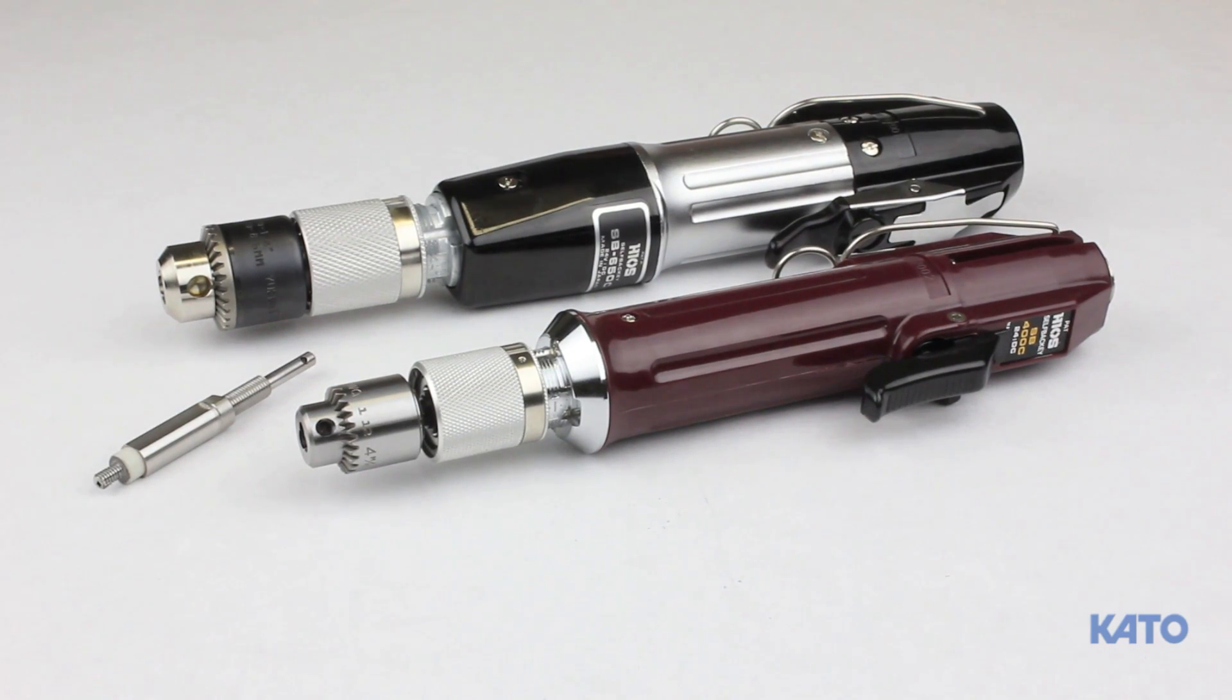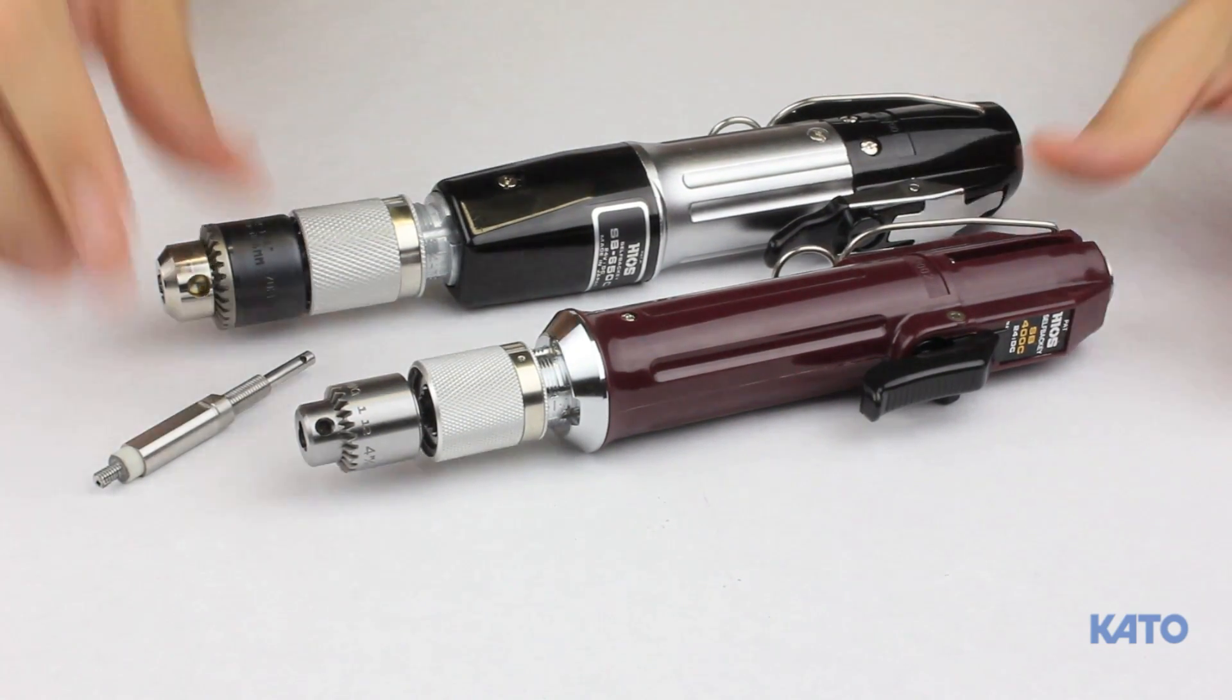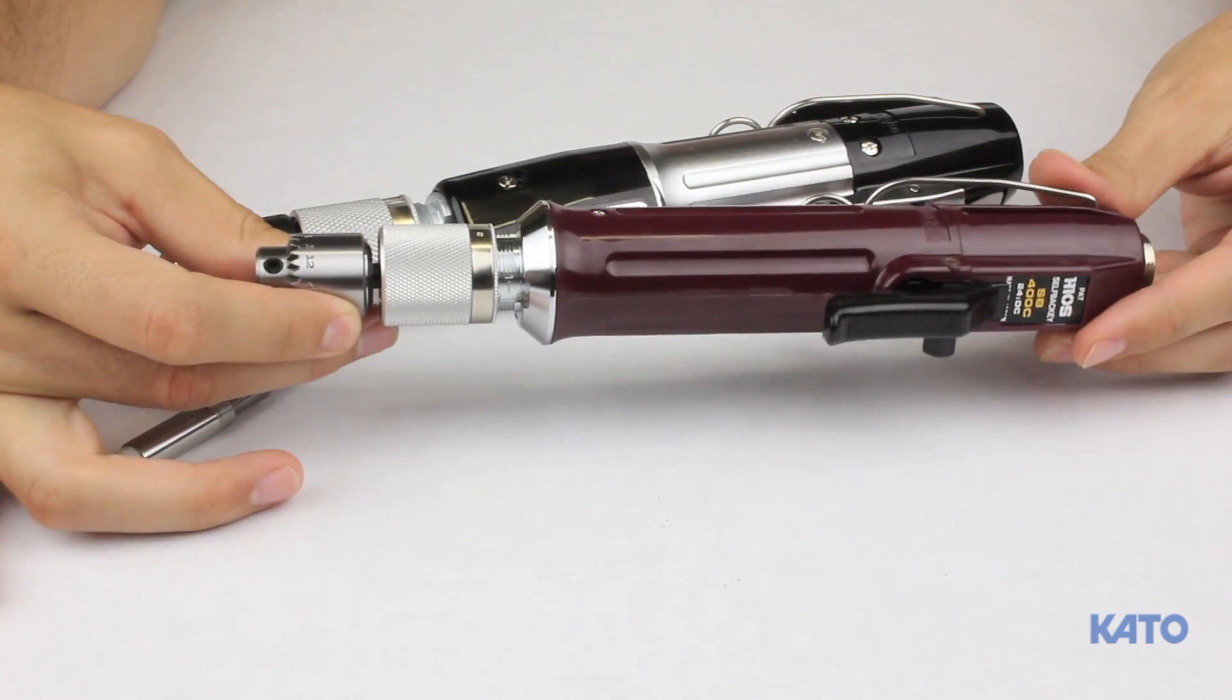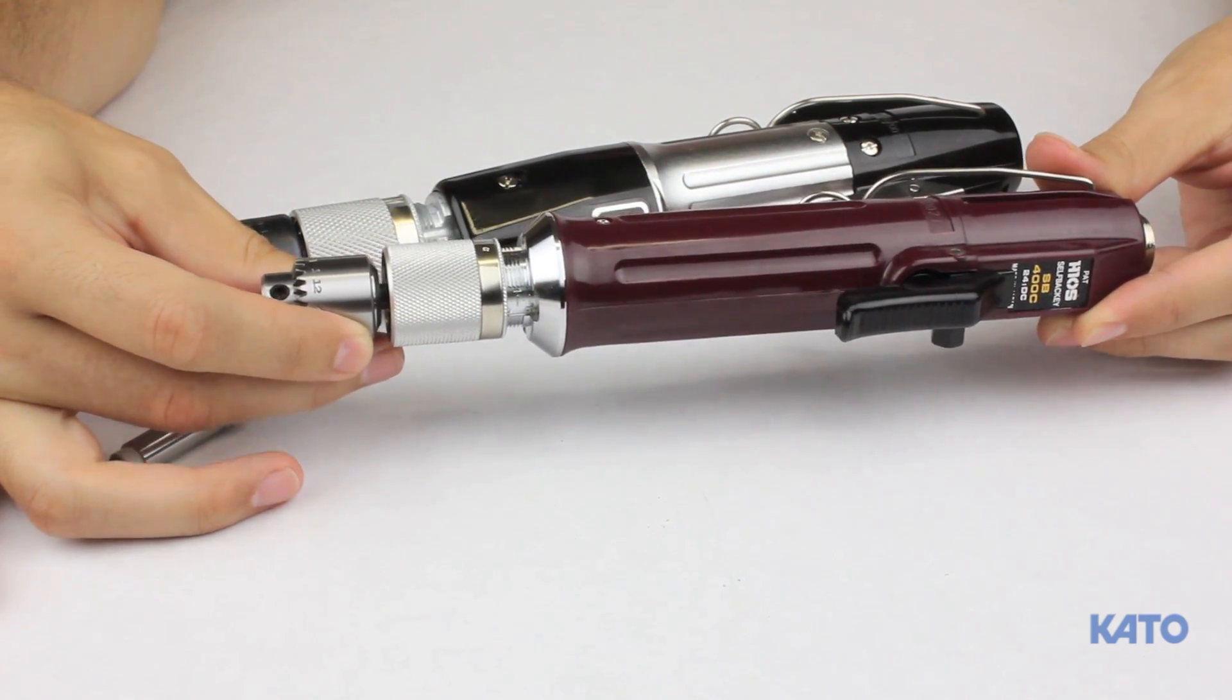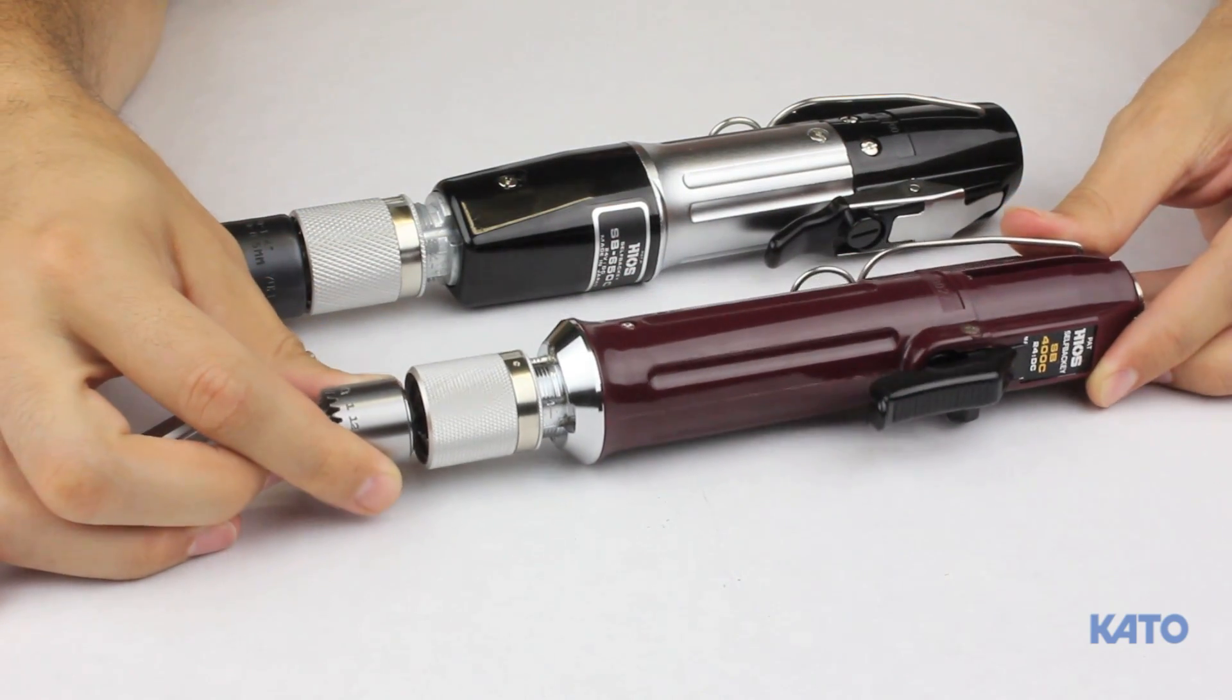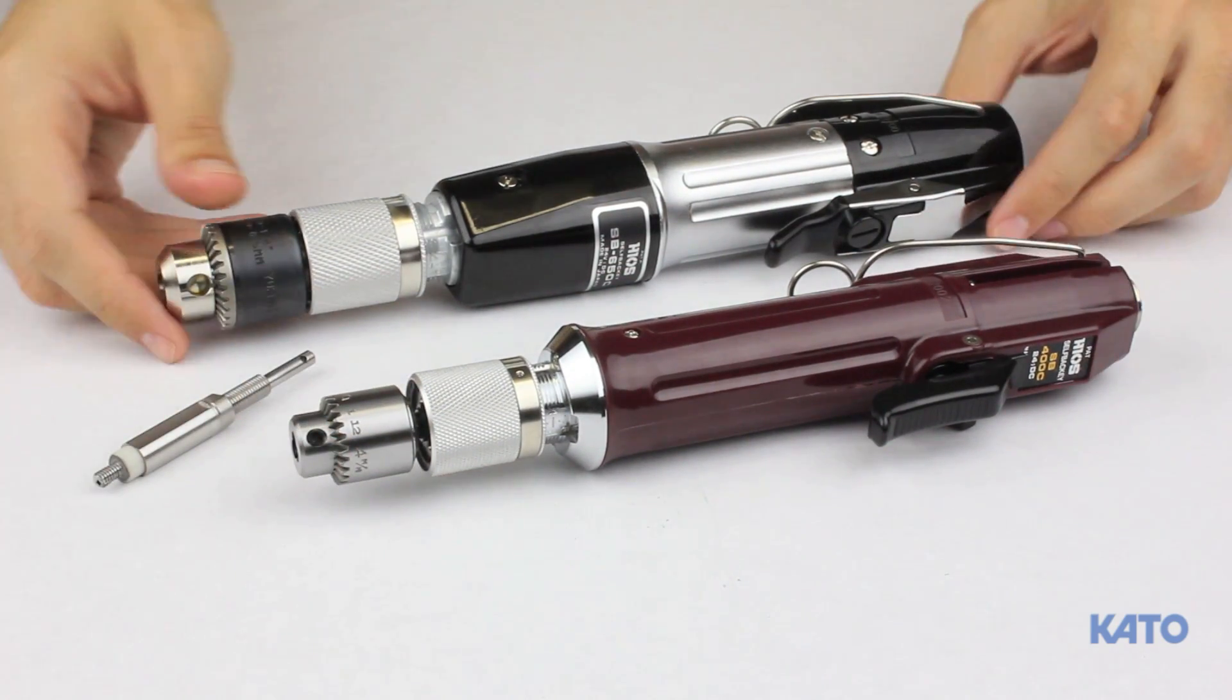The next component is the electric driver. This is the SB400C electric driver. It is capable of installing inserts up to and including some 8-32 and M5 inserts. This is the SB650C electric driver.